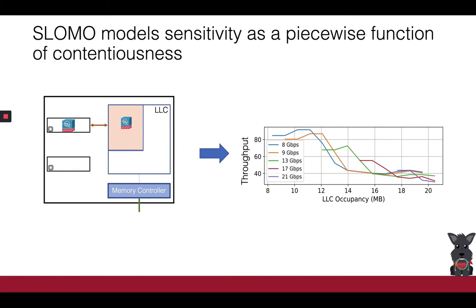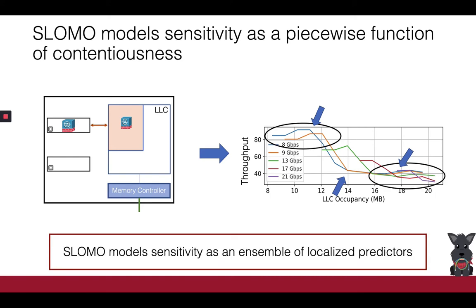SlowMo's data-driven insights enable accurate modeling of various sensitivity functions. Specifically, we find that sensitivity exhibits clear phase transitions as competing contentiousness increases. This allows SlowMo to model sensitivity as a piecewise function of contentiousness using known ensemble methods from the machine learning literature.